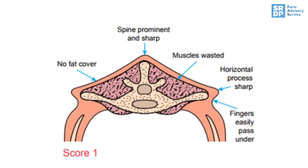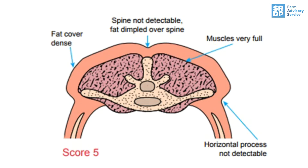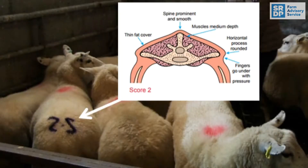When condition scoring, there are five main scores, where one is very thin and five is excessively fat. We then further break these down with half scores to define a condition score for individual ewes.